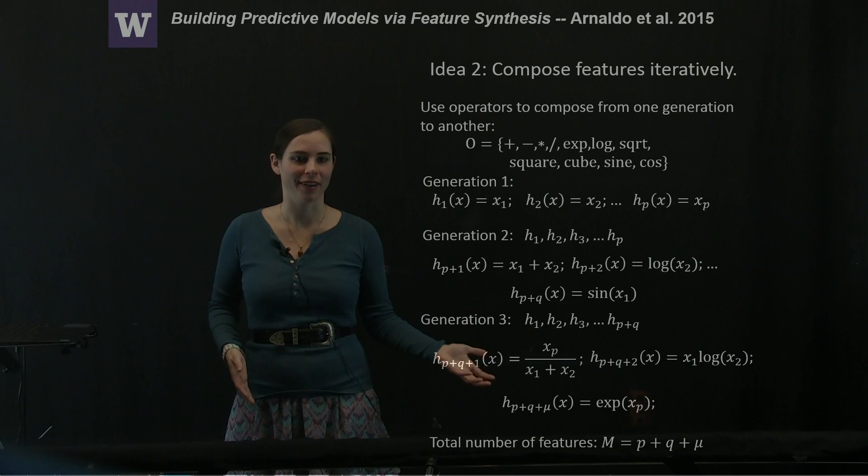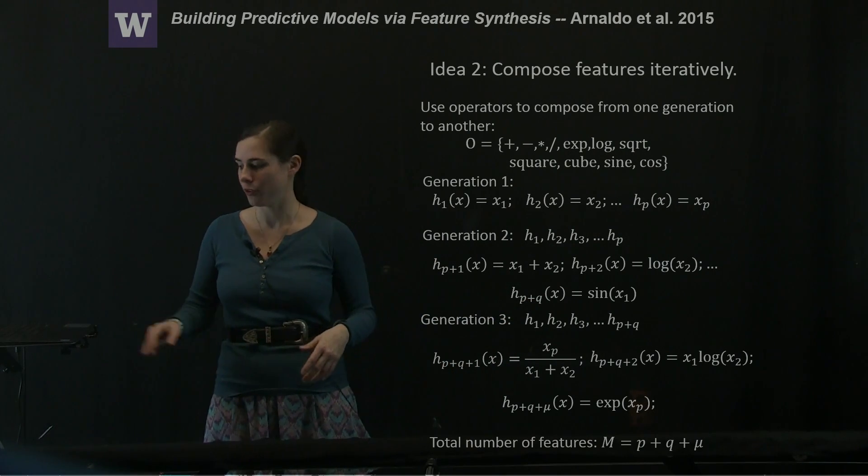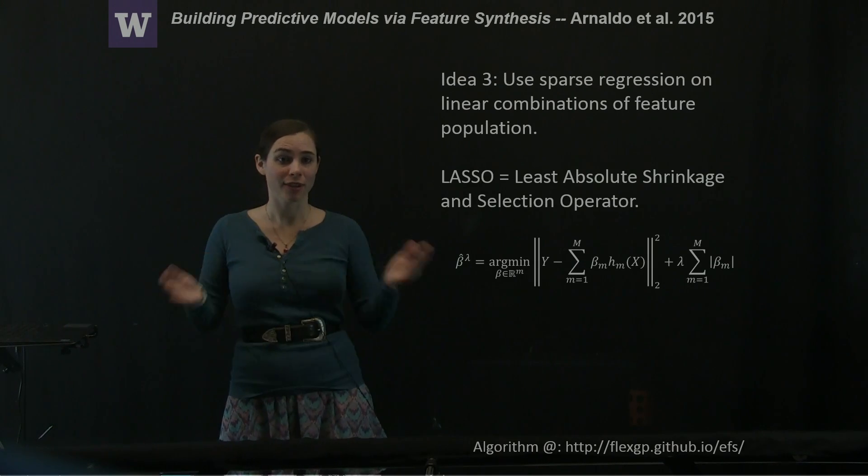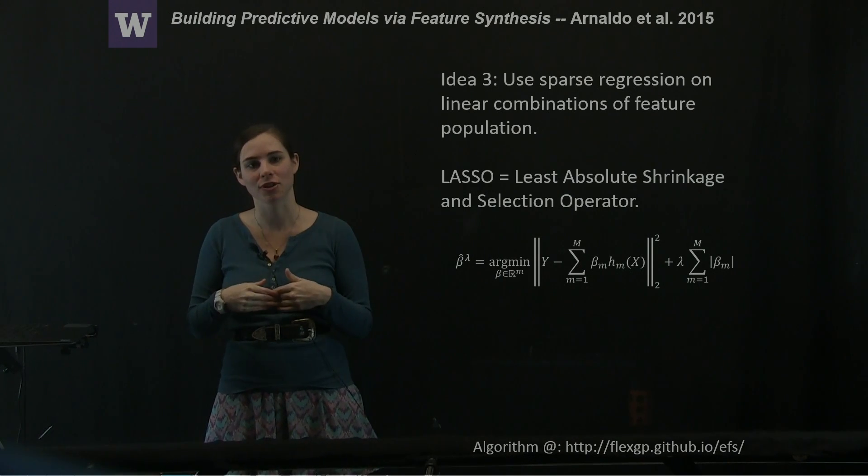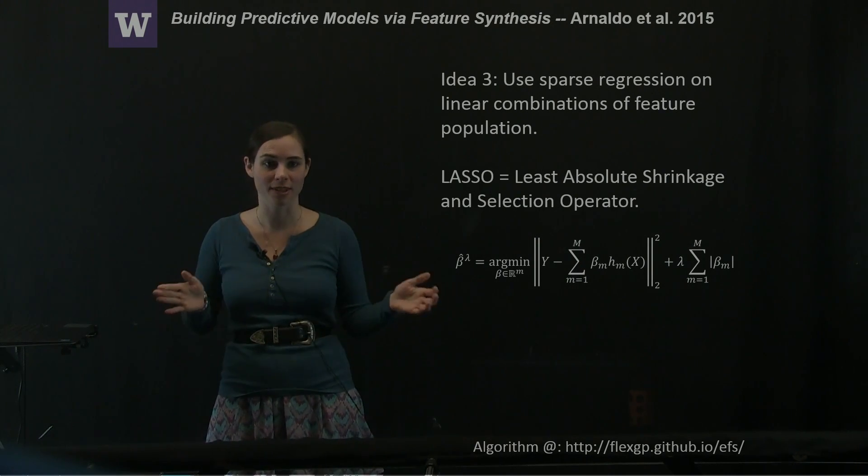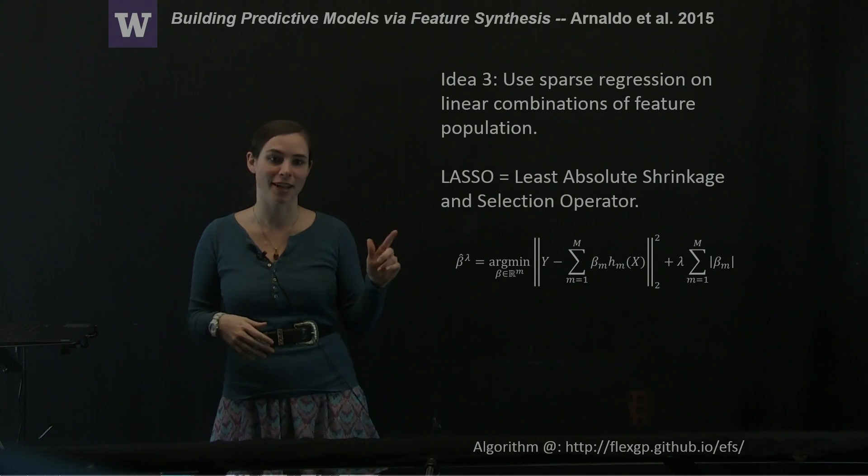Now we want to be able to evaluate which of these features are actually useful for describing the behavior in our current generation. The method for determining and selecting and evaluating these features is they want to use sparse regression on linear combinations of the feature population. One method for doing sparse regression is LASSO, or the least absolute shrinkage and selector operation.